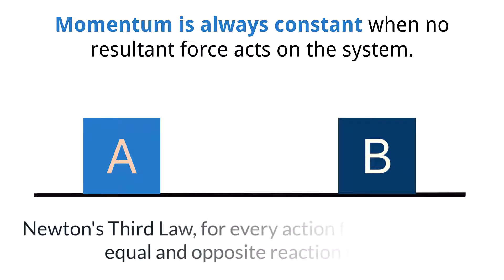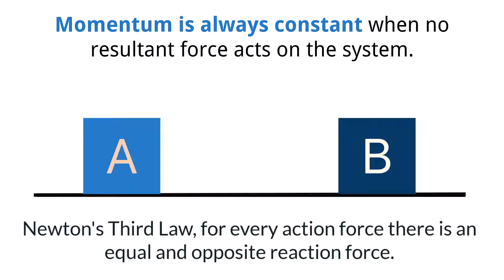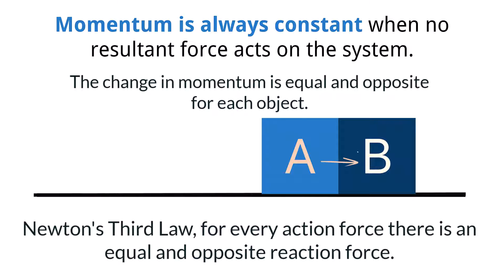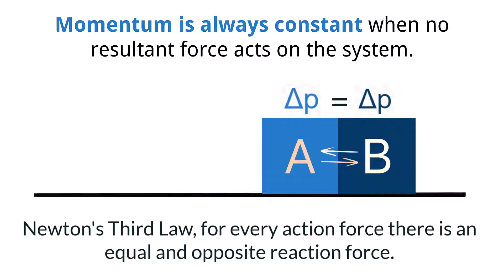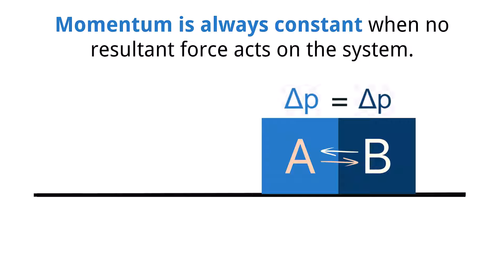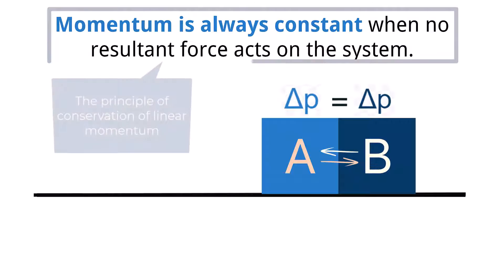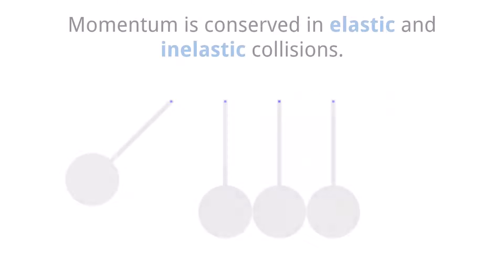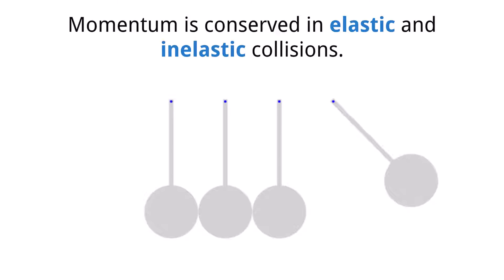Newton's third law states that for every action force there is an equal and opposite reaction force. During collisions, objects abide by this law, and thus in a collision between two objects, the impulse imparted from object A onto object B is equal and opposite to the impulse imparted from object B onto object A. Since the impulse is the change in momentum of the object, and that value is the same but opposite for objects A and B, then both objects will have the same change in momentum. The result is that the total momentum in the whole system remains constant when there is no external force acting on the system. This is known as the principle of conservation of linear momentum, which always holds true in all types of collisions.